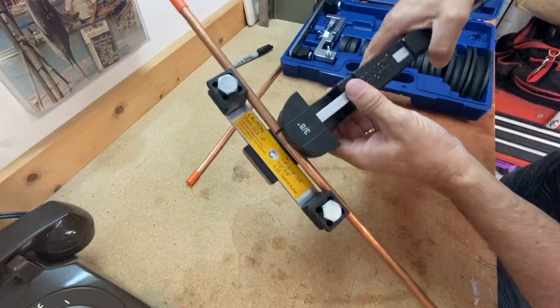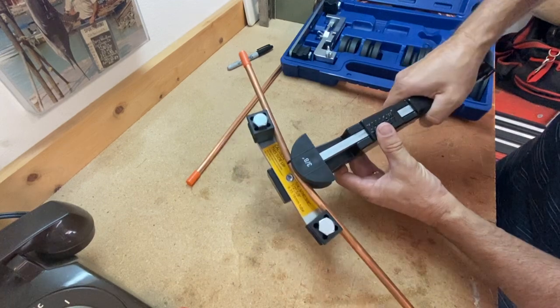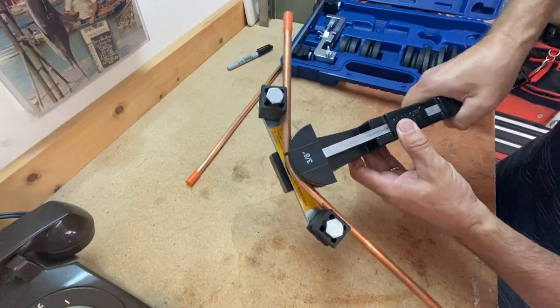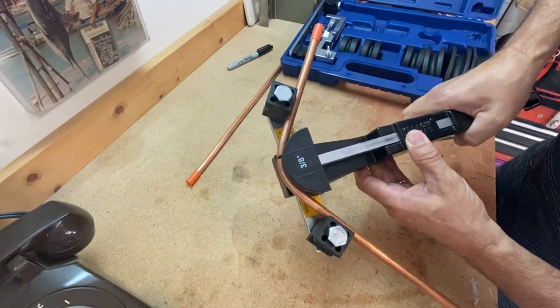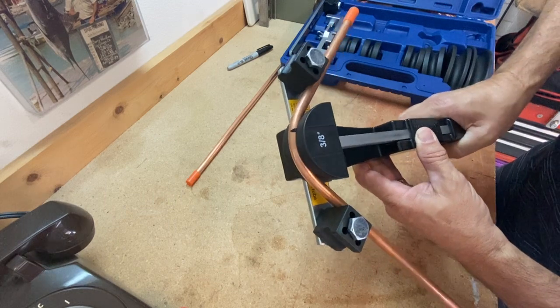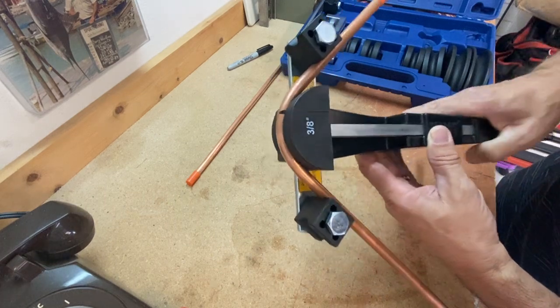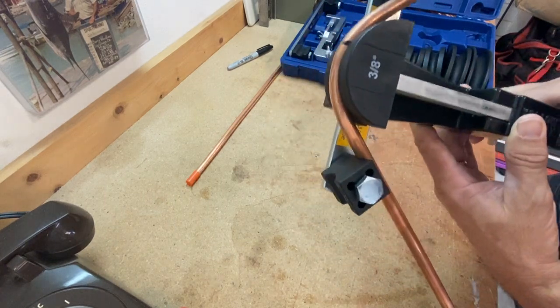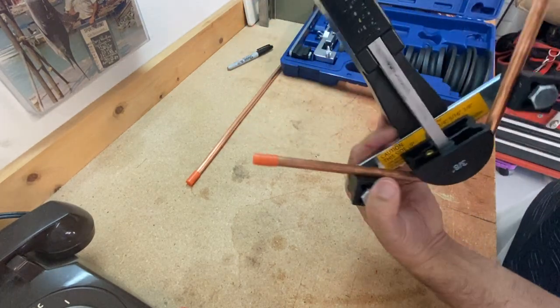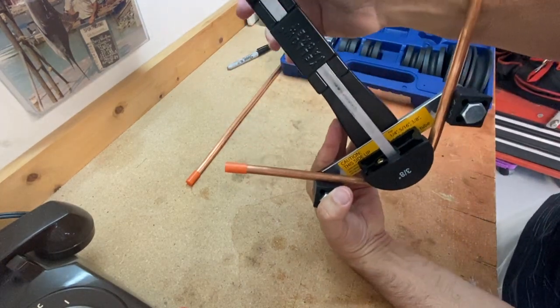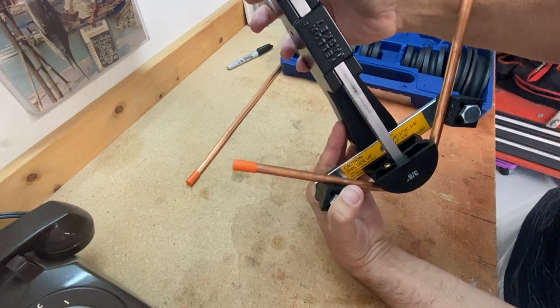So now as I ratchet this, you can see that it just puts a nice easy bend. You've got to kind of eyeball that to see where 90 degrees is at. Let's put it this way so you can see. So that would be just about 90 degrees right there.